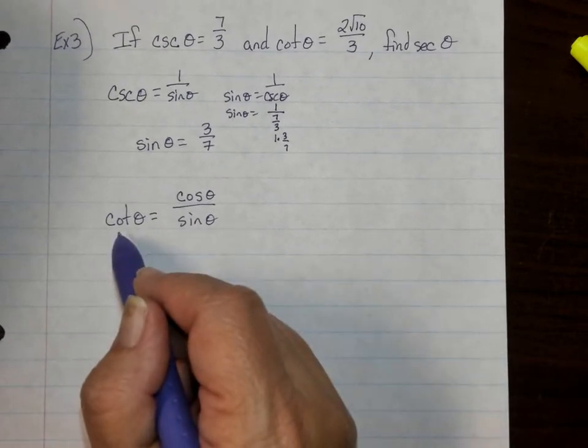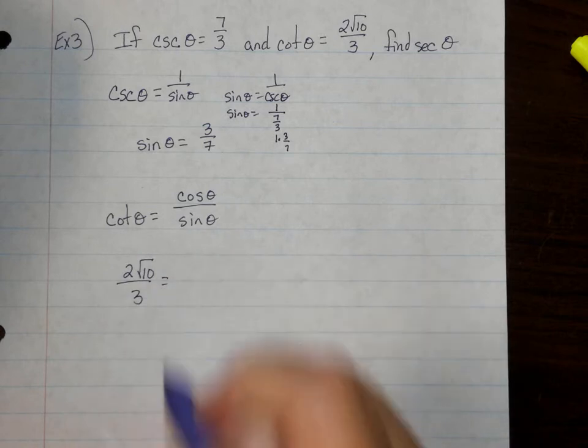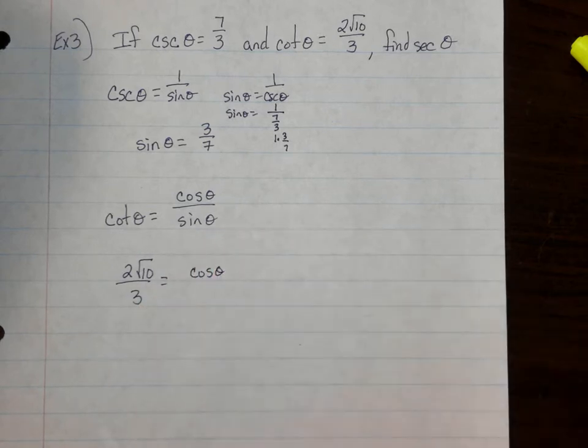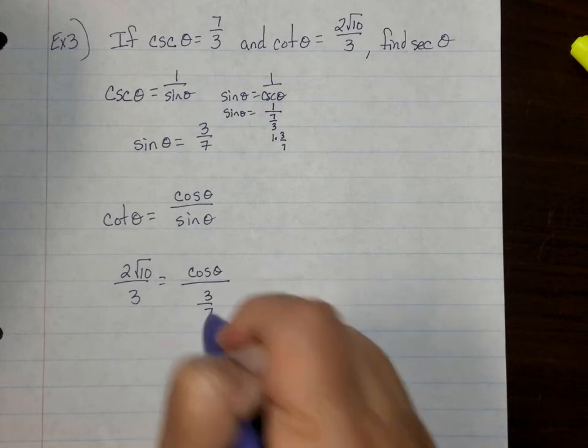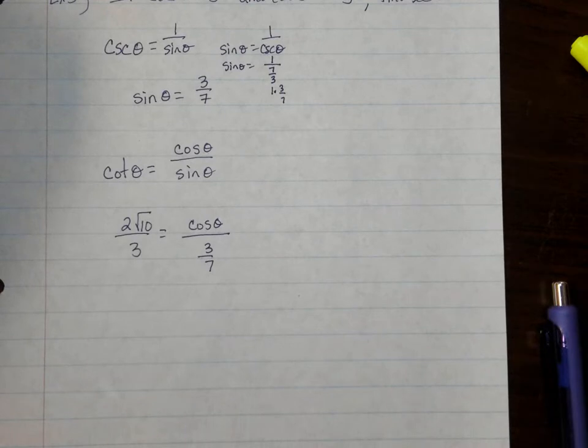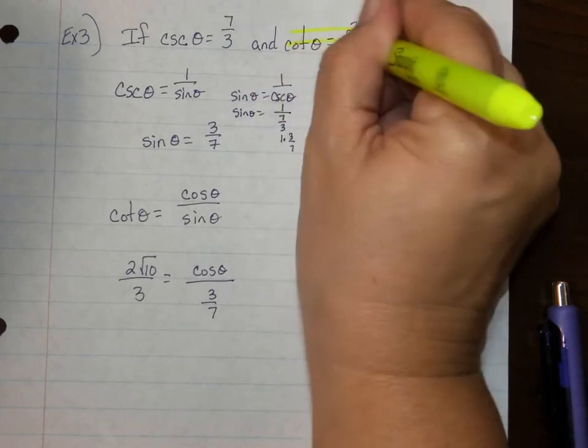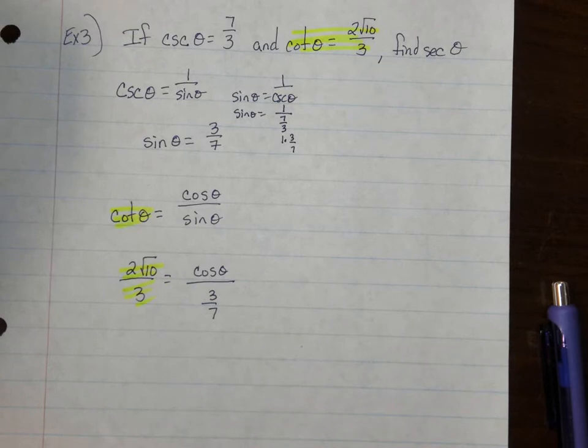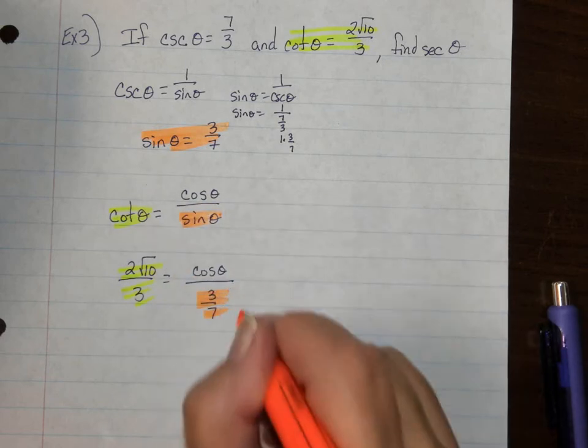Alright, so now I know what sine theta is. Well, I know that the cotangent of theta, that division, that quotient identity says that the cotangent of theta is cosine theta divided by sine theta. Right? So, for cotangent of theta, I'm going to substitute 2 square roots 10 over 3. For cosine theta, I don't know what that is. And then for sine theta, I'm going to put in 3 7ths. Alright, again, if it helps you to track what you're substituting, here's my cotangent of theta, cotangent of theta, substitute that in there.